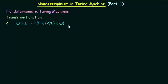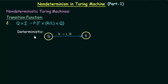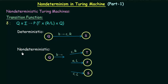Let's take an example. This is the transition diagram for a deterministic Turing Machine with two states Q and S. State Q on getting input symbol B will write C onto the tape and move to the right, going to state S. On getting a particular input symbol, it goes to only one state — for this combination, it will only go to state S and not to any other state.